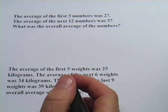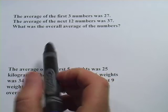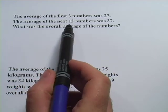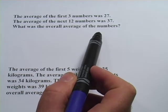In these problems, we're talking about overall average. Let's look at the first one. It says the average of the first three numbers was 27, and the average of the next 12 numbers was 37. What was the overall average of the numbers?